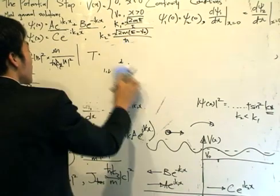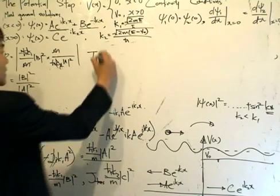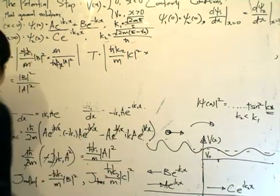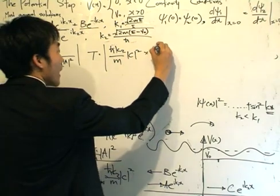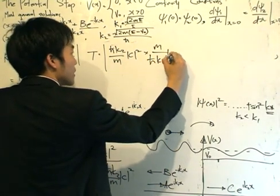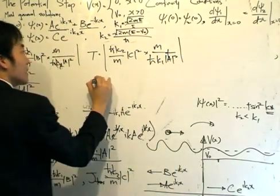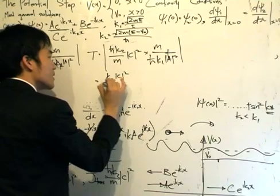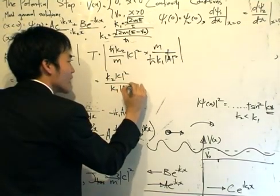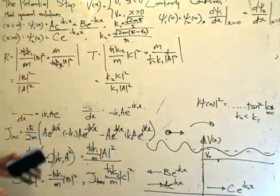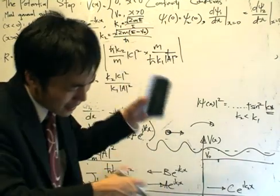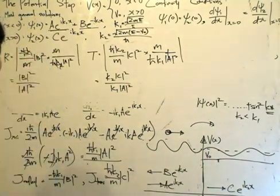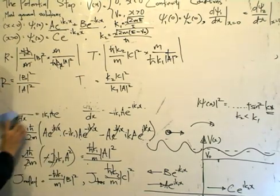For the transmission coefficient, we take the magnitude of J transmitted — h-bar k2 over m times the magnitude of C squared — divided by J incident, which gives mass over h-bar k1 times the magnitude of A squared. The mass and h-bar cancel, but k1 and k2 do not cancel. So the transmission coefficient T equals k2 divided by k1 times the magnitude of C squared over the magnitude of A squared. This makes sense because we're comparing plane waves in two different regions where the wave numbers are k2 and k1 respectively. These are our reflection and transmission coefficients.